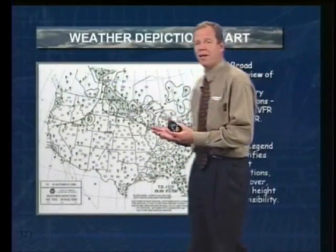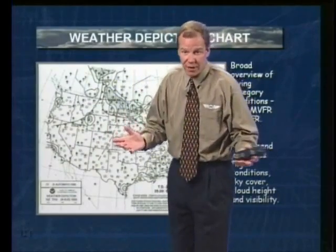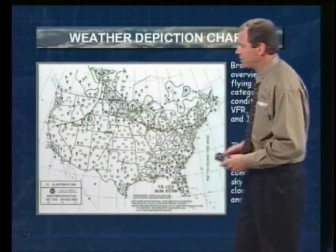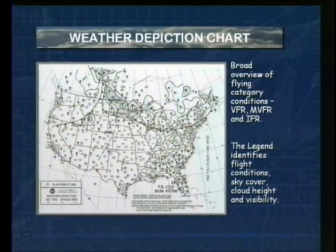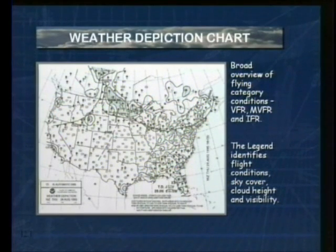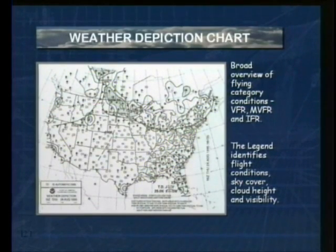A weather depiction chart is nothing more than a snapshot in time of the weather going on across a certain area of the country. In this case, the weather depiction chart is simply a broad overview of flying category and conditions — VFR, MVFR, which is marginal VFR, or IFR. The legend identifies flight conditions, the sky cover, the cloud height, and the visibility.